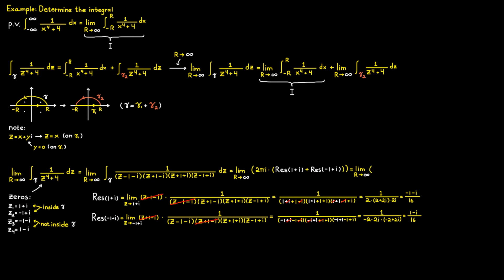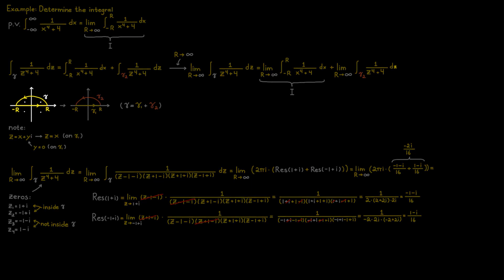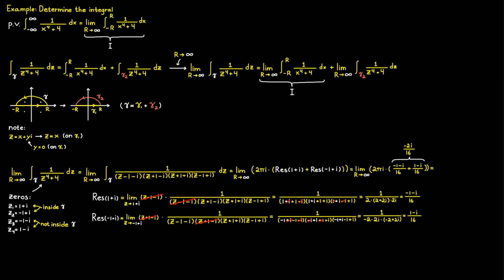We insert these two residue results, then simplify the two fractions since they share the same denominator, getting minus 2i divided by 16. The last thing is to take the limit as r approaches infinity. Since nothing in the expression depends on r, we note that we already used that limit earlier to ensure c1 and c2 were inside contour gamma. In the end, this limit equals pi divided by 4.